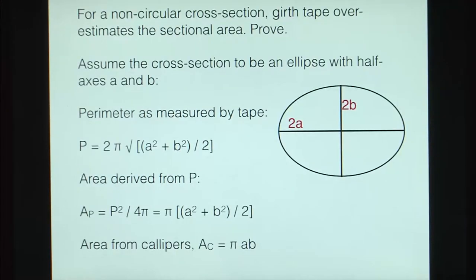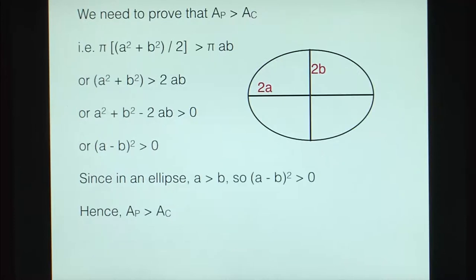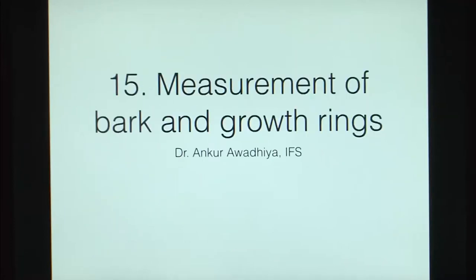For a non-circular cross section, the girth tape overestimates the sectional area. This is one thing to keep in mind when comparing cross-sectional areas as measured using a tape versus calipers.